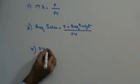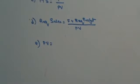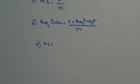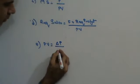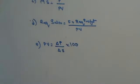Next, PV is also going to be equal to change in profit upon change in sales into 100. So these are the formulas.